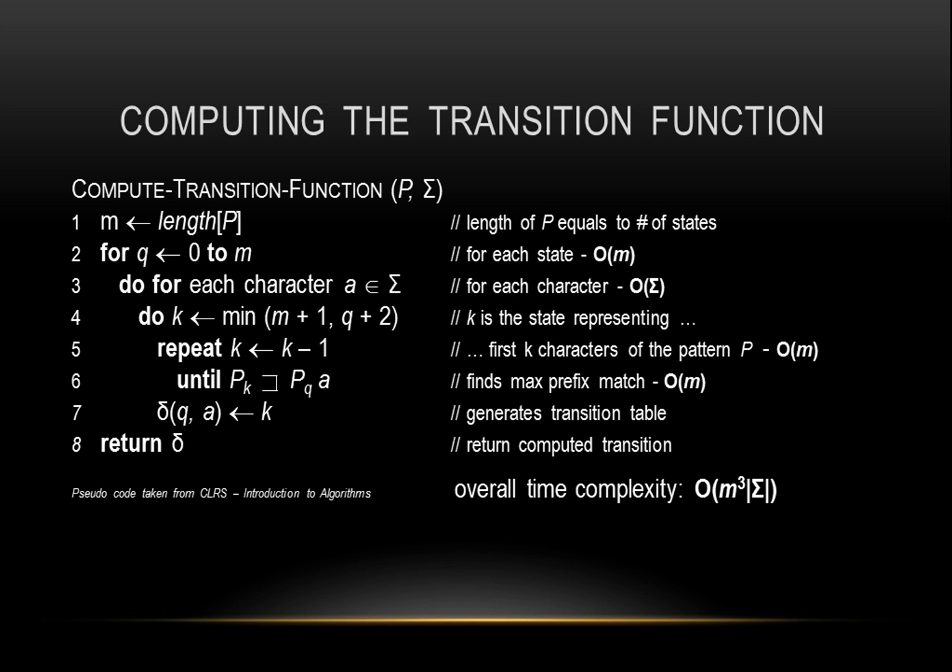Let's examine what each line of this pseudocode does. Line 1 assigns the length of the pattern to the variable m. The number of states will be determined by the value of m. Lines 2 and 3 run this function through each state for each character, while lines 4 to 6 generates the match, which corresponds to the longest prefix of the pattern that is also the suffix of the string read so far. In other words, k is the state representing the successfully matched pattern up to its kth character.